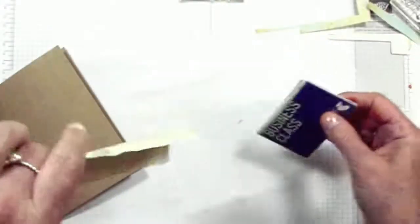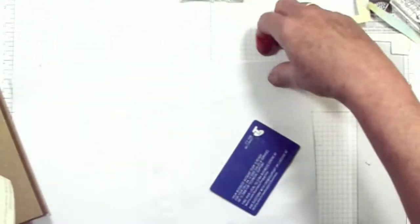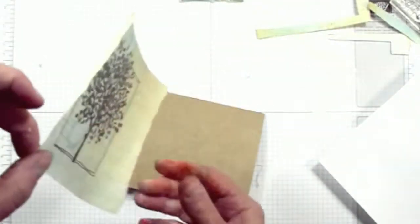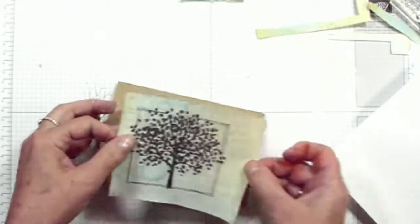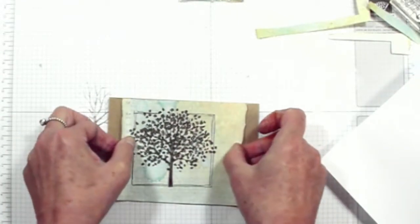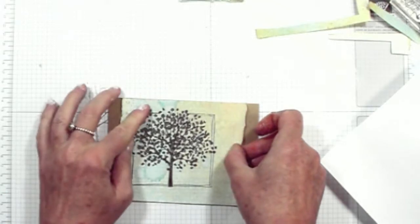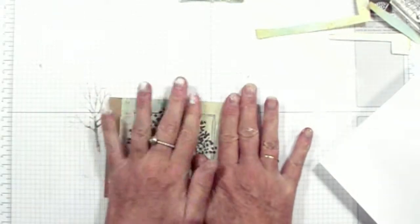Dries quite quickly. Pop your piece of scrap paper out of the road. Measure it so that it's even with the top fold. Press down.